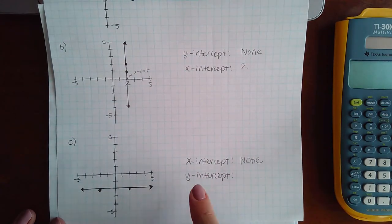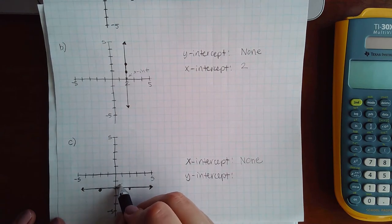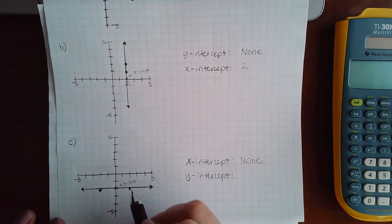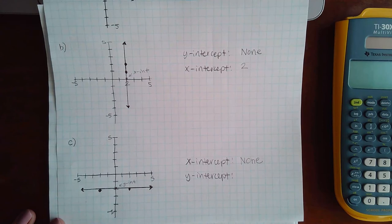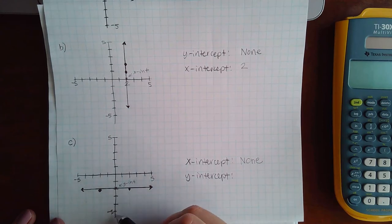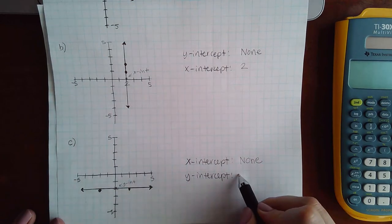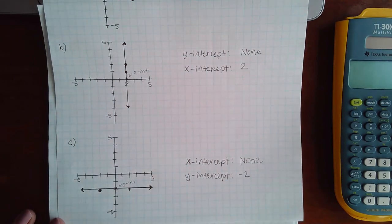However, for the y-intercept, it does intersect the graph here in the y-axis. What is that value? If this is negative 5, then this is 1, 2, negative 2. So the y-intercept would be negative 2.